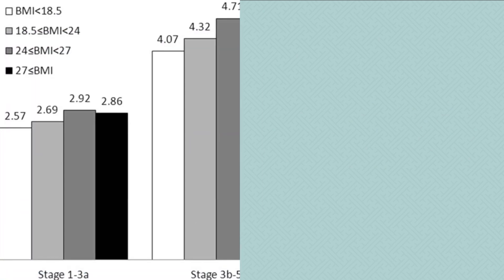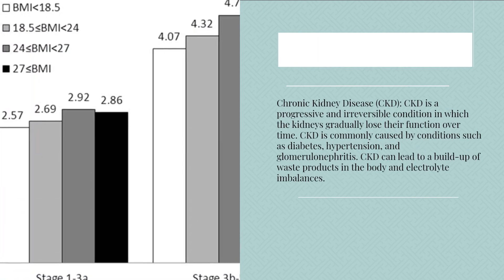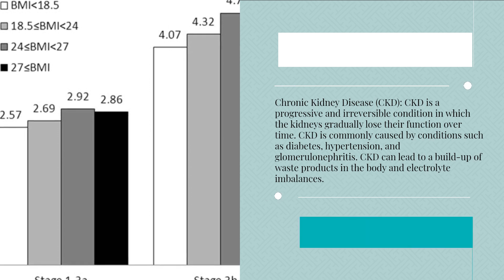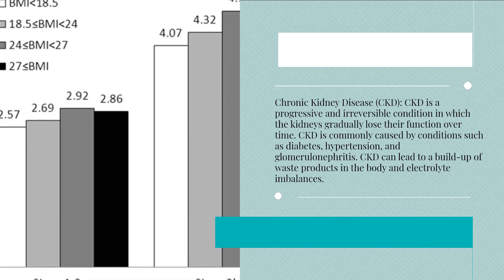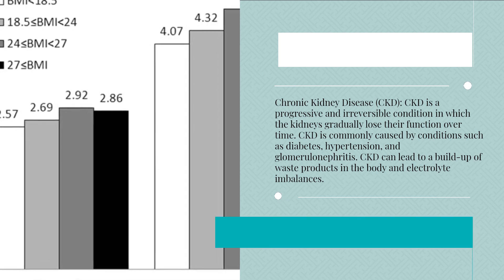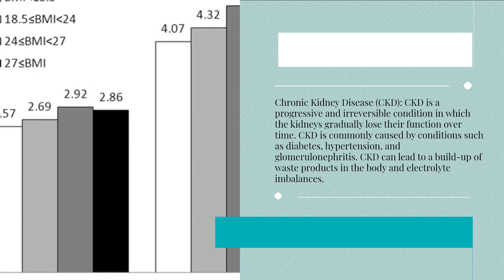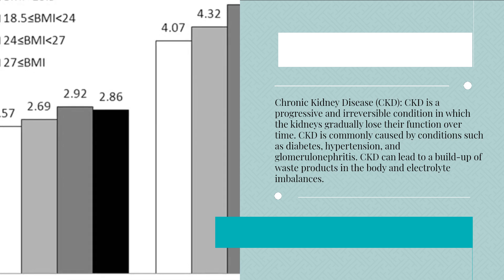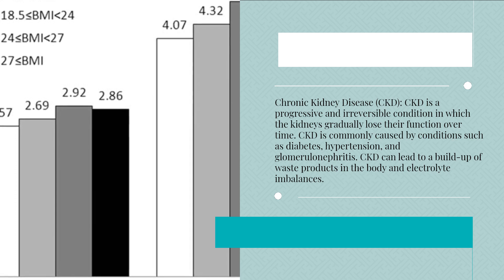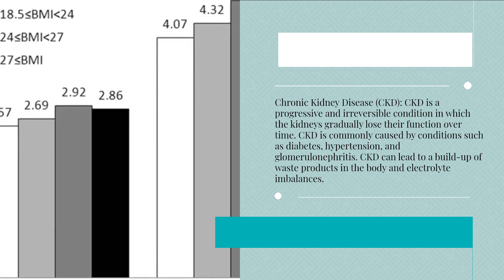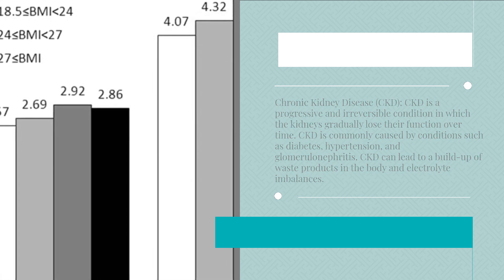Chronic Kidney Disease (CKD) is a progressive and irreversible condition in which the kidneys gradually lose their function over time. CKD is commonly caused by conditions such as diabetes, hypertension, and glomerulonephritis. CKD can lead to a buildup of waste products in the body and electrolyte imbalances.